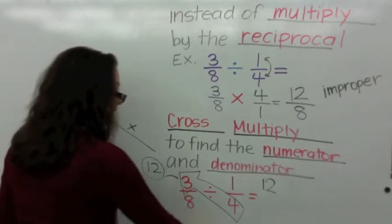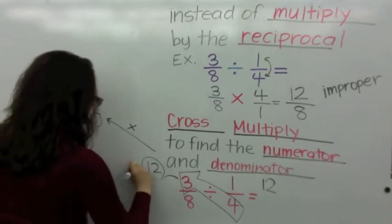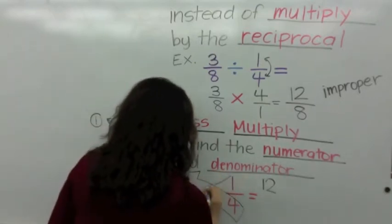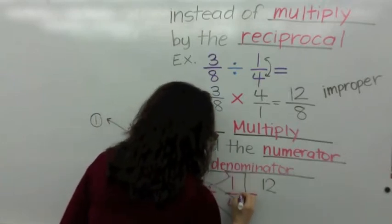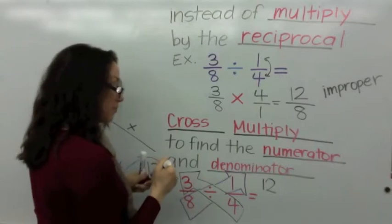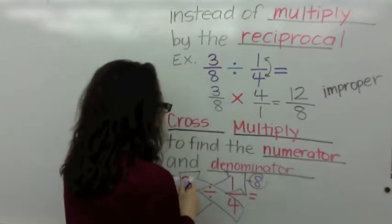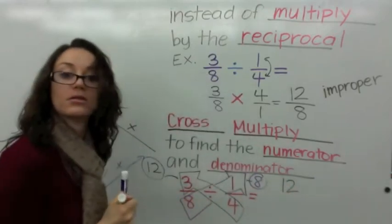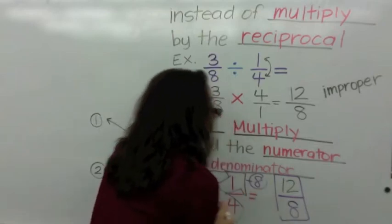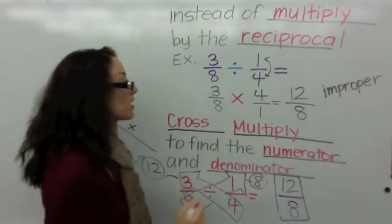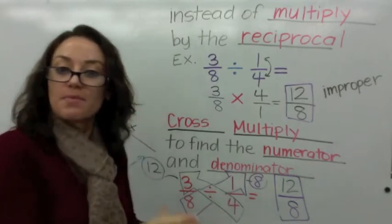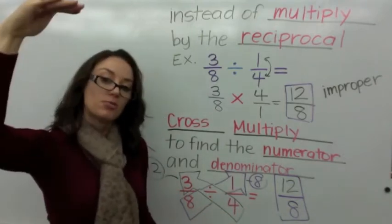Then you multiply going the other direction — the way you read, from left to right — so now we multiply: 8 times 1 is 8. That is the denominator. So on top we have 12 as the numerator and the denominator is 8. Is 12 over 8 the same fraction as 12 over 8? Yes — it's magic! The shortcut: all you have to do is cross multiply to find the numerator first and then the denominator.